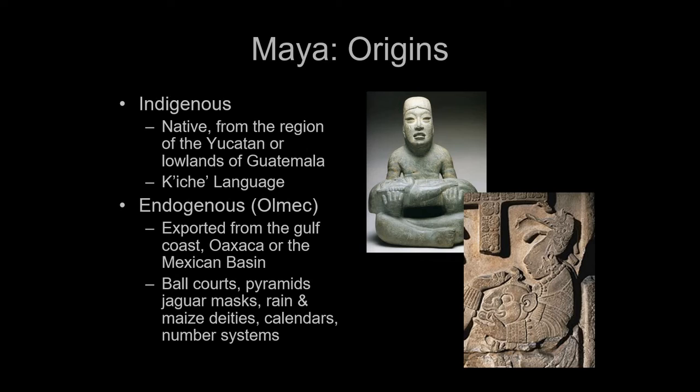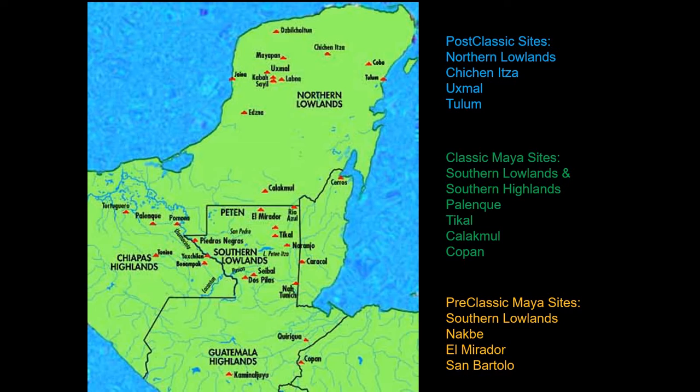There's a lot more kinship between the Olmec and the Maya. Honestly, I don't know exactly what to believe, and most experts can't answer this either. The most likely scenario is a native population heavily influenced by some kind of elite group from the collapse of the Olmec civilization. The pre-classic Maya sites are going to be in what we call the southern lowlands — where you'll find Nakbe, El Mirador, and San Bartolo. This is kind of the heartland of the Maya.